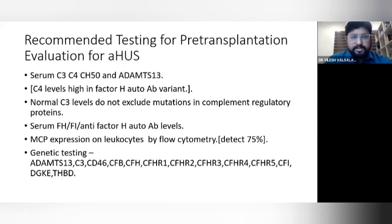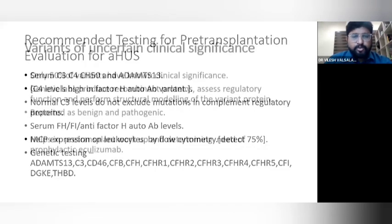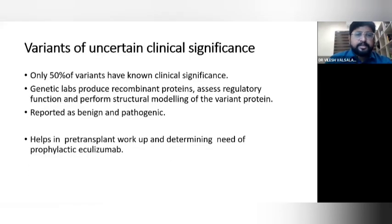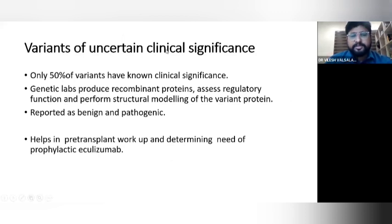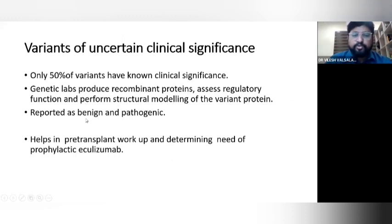With pre-transplant tests, patients can be identified as low, moderate, or high risk. Up to 50% of genetic variants have known clinical significance. Nowadays, recombinant proteins can be made to assess the regulatory function and perform structural modeling to determine whether a variant is benign or pathogenic. If a variant is reported as pathogenic, prophylactic eculizumab should be given prior to transplant, anticipating post-transplant complications.